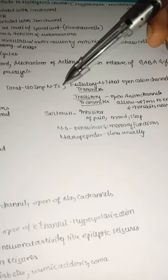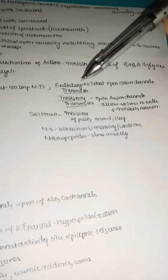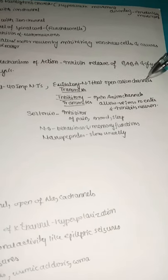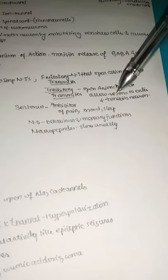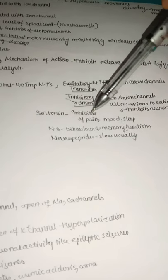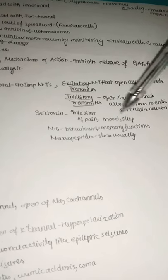There are 14 important neurotransmitters divided into excitatory and inhibitory. Excitatory transmitters open cation channels (positive ions), whereas inhibitory transmitters open anion channels allowing negative ions to enter. Serotonin is also an inhibitor of pain and helps control mood and sleep cycles. Nitric oxide is useful for behavior and memory functions. Neuropeptides are usually slow acting.